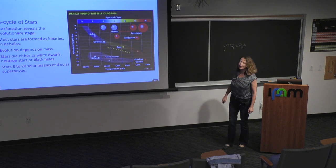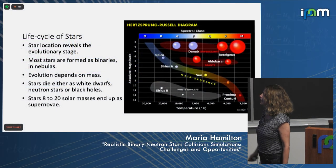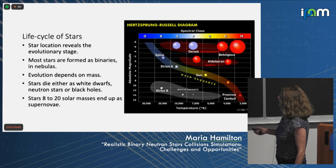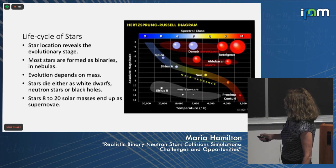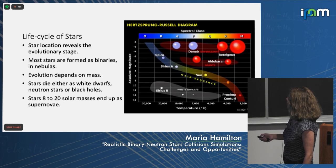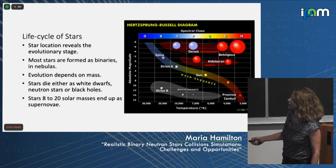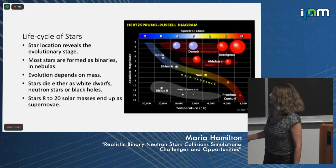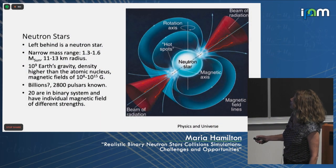Let's start with talking about stars. The life cycle is very well presented in the famous Hertzsprung-Russell diagram, which shows that stars spend most of their life in the main sequence and their evolution depends on mass. When stars burn their fuel, they collapse and end up either as white dwarves, neutron stars, or black holes. We are mostly interested in stars from 8 to 20 solar masses that end up as supernovas, and what is left behind after the supernova explosion — we end up with a neutron star.